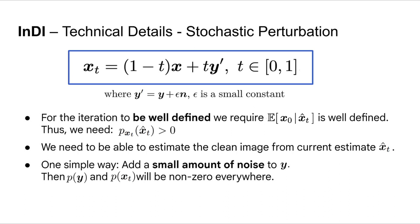So, in the end, our intermediate degradations, x_t, are given by this simple convex combination between the input with very little noise added and the clean target. The strength of the added noise is controlled by epsilon. As we will see, this is actually quite important in some applications that have non-stochastic degradations such as super-resolution or JPEG compression.